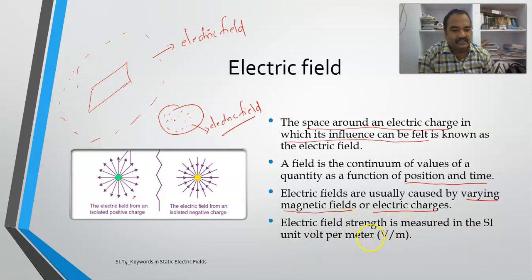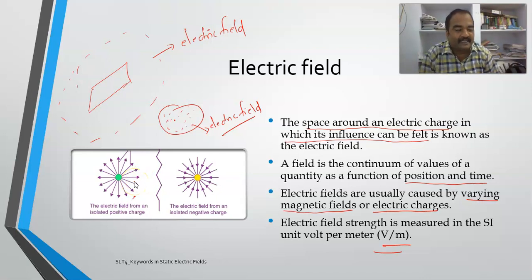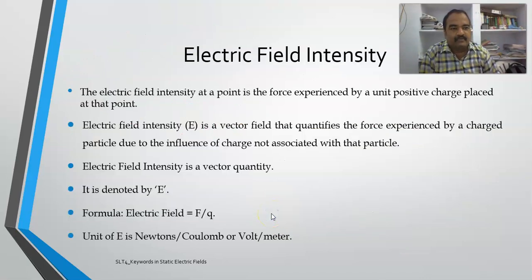Electric field intensity is measured in volts per meter. As shown in the diagram, assuming a positive charge and a negative charge as isolated point charges, the area represented by the arrows is the electric field. These arrows are termed lines of force, or electric lines of force, also called electric flux lines, which we will discuss in the next slide.